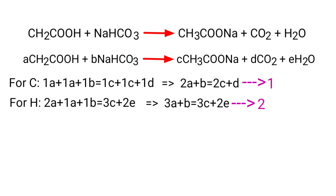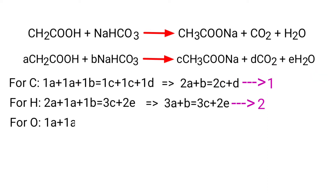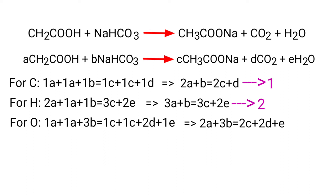For Oxygen: 1A plus 1A plus 3B equals 1C plus 1C plus 2D plus 1E. So 2A plus 3B equals 2C plus 2D plus E.